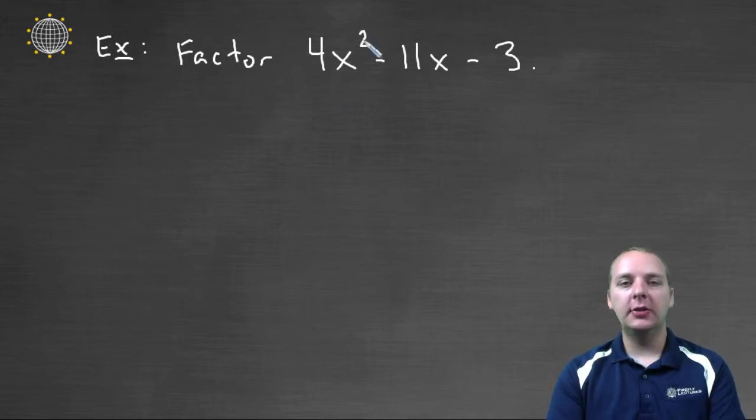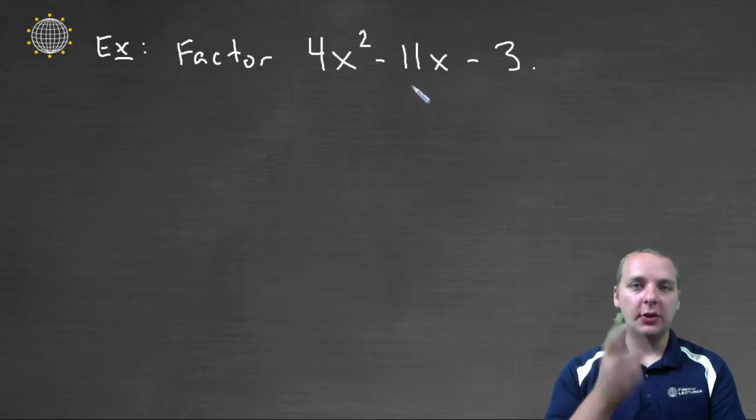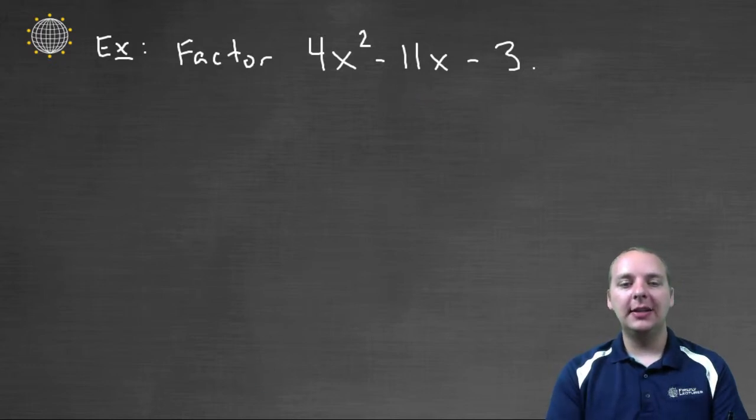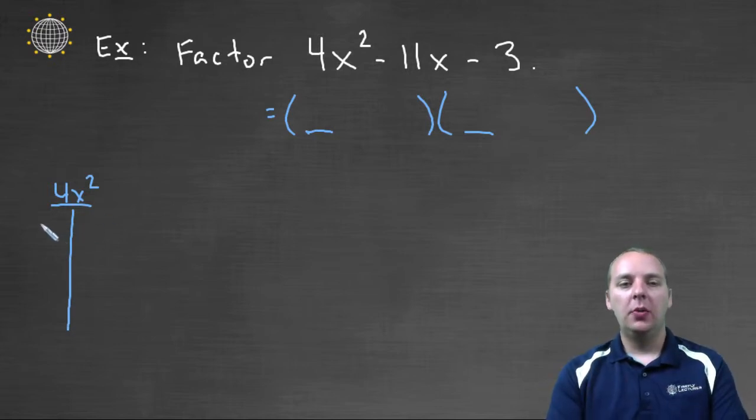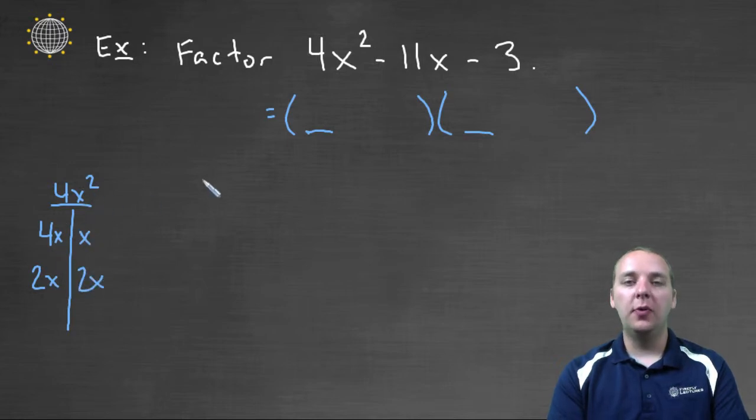So we want to factor four x squared minus eleven x minus three. I recognize that this is a trinomial that's a quadratic. And so I know that the basic template of my answer is going to be something plus something times something plus something, or possibly minus, but you know what I'm saying. And the first two terms here have to multiply to four x squared. So let me take four x squared over here on the side, and we're going to write down what could possibly multiply to four x squared. Well, we could have a four x and an x, or we could have a two x and a two x. Either one of those would give me four x squared.